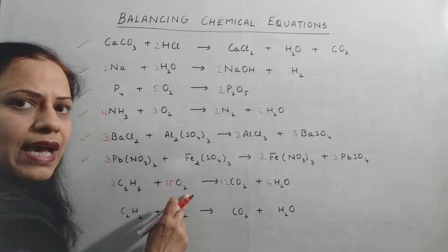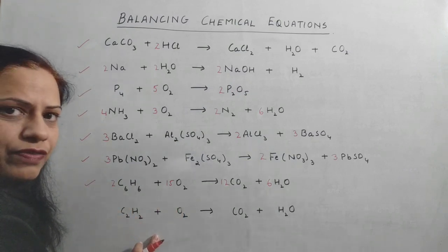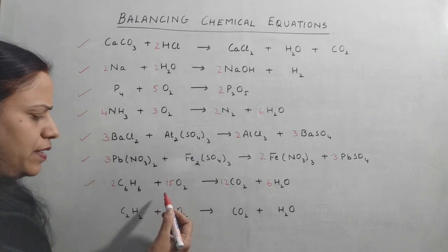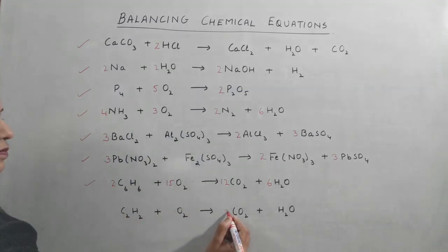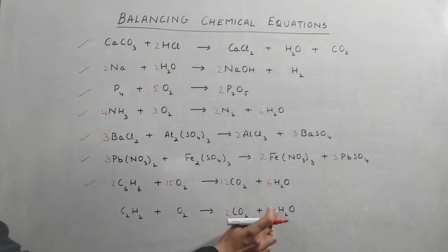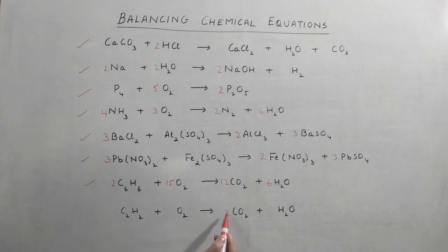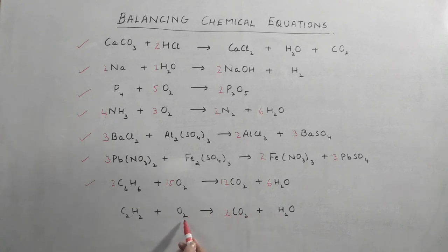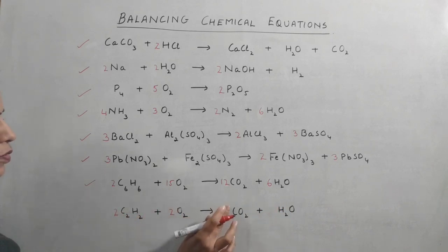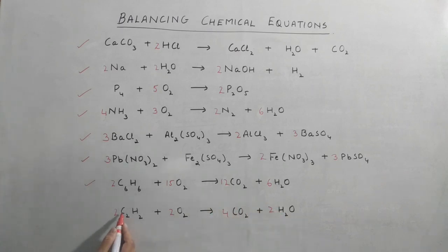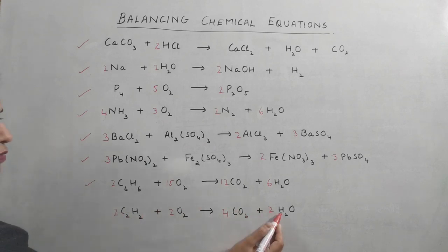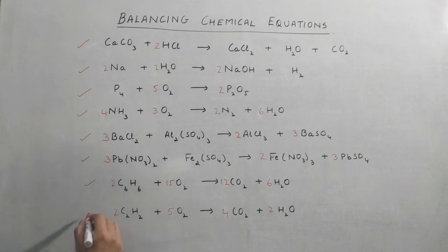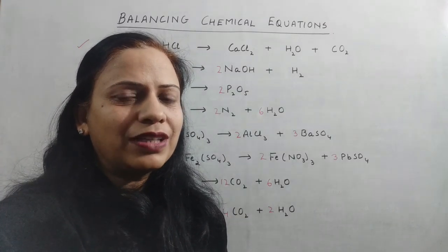The last equation is quite similar. There are two carbons — already balanced, two hydrogens — already balanced. For oxygen, there are two atoms on the left and five on the right — an odd-even problem again. Multiplying by two gives: coefficient 2 on the organic compound, four carbon, four hydrogen, and oxygen becomes eight plus two equals ten. We remove the 2 from O₂ and write a coefficient of 5, since five times two equals ten. Our last equation is also balanced.